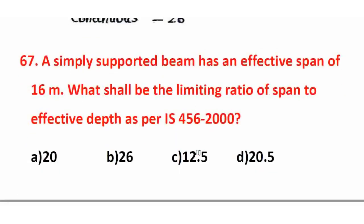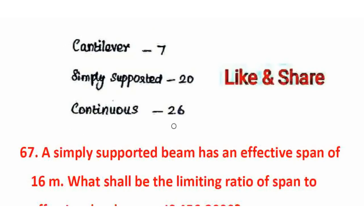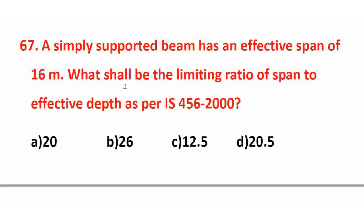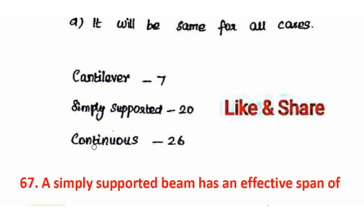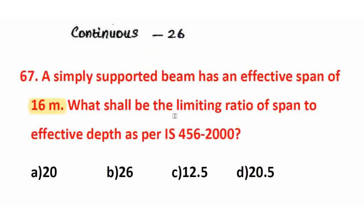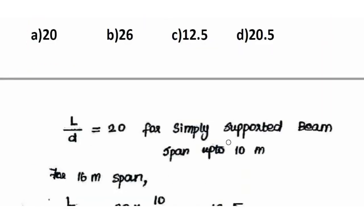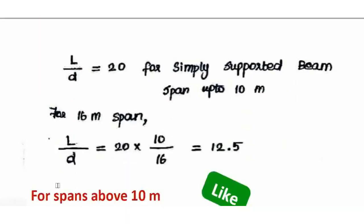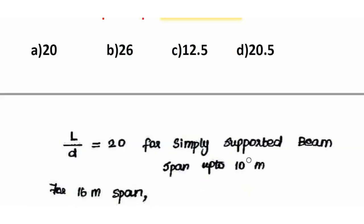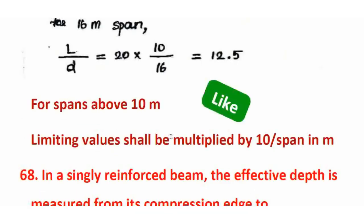Next question: A simply supported beam has an effective span of 16 meters. What shall be the limiting ratio of span to effective depth as per IS456? The basic L/D ratio of 20 is valid for spans up to 10 meters. For spans greater than 10 meters, the ratio is modified: L/D = 20 × (10/16) = 12.5. So the right answer is 12.5.